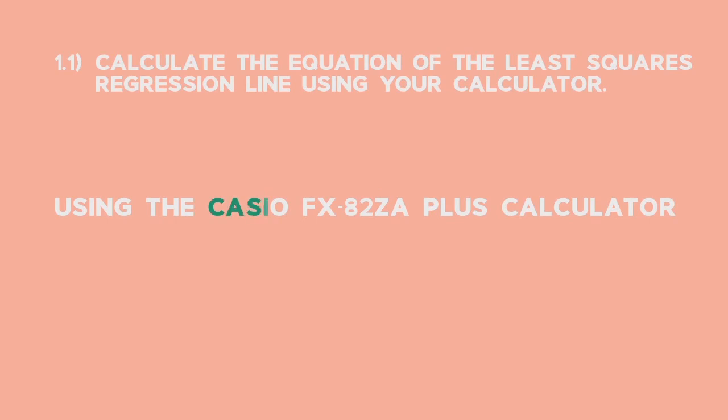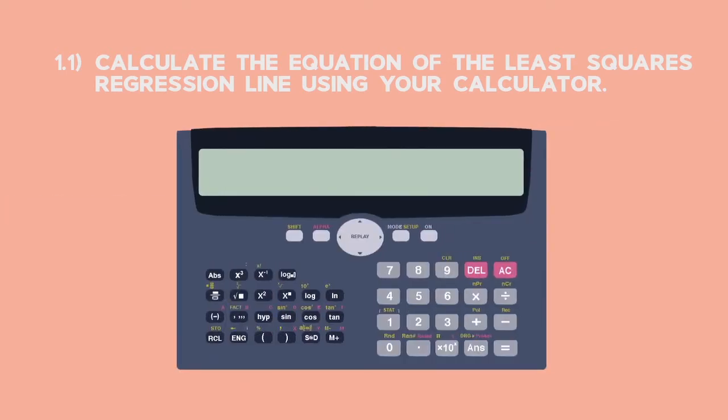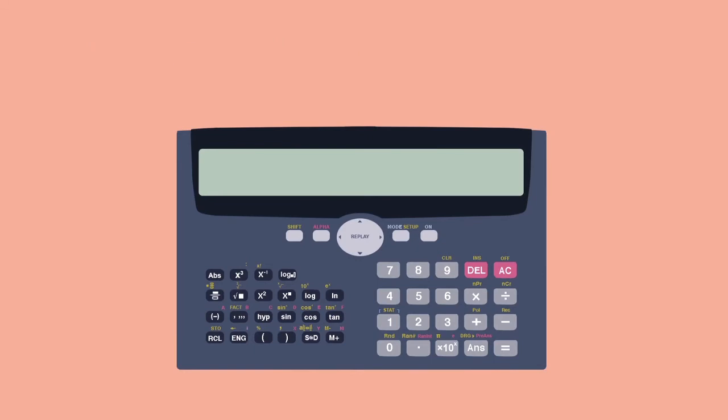We're going to use the Casio FX82ZA plus calculator to work out the equation of the regression line. Make sure you learn the steps that are specific to your scientific calculator.